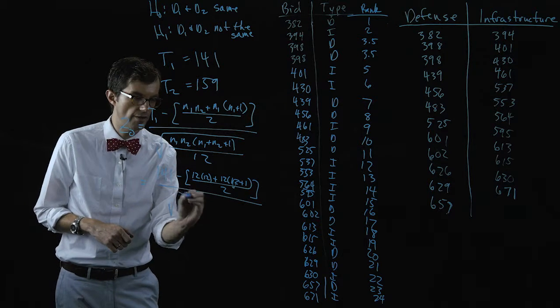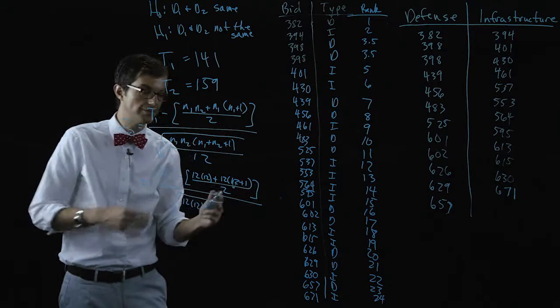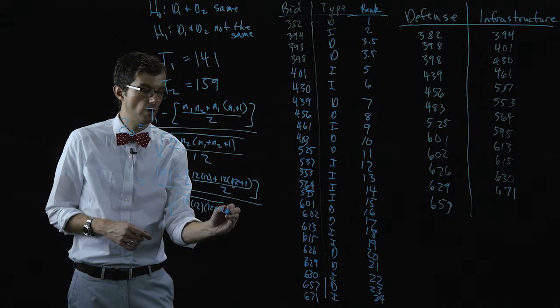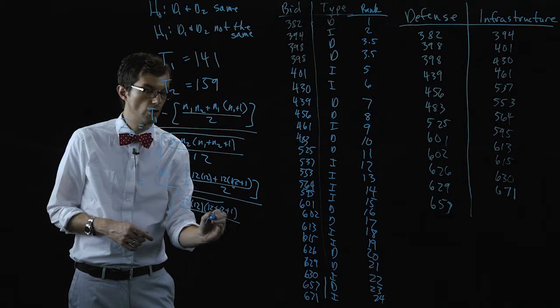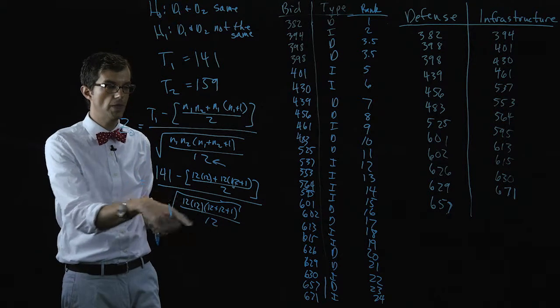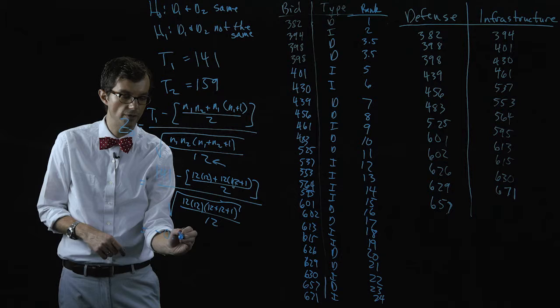Here we have twelve times twelve plus twelve times twelve plus one all over two. Down here we have the square root of twelve times twelve, the sample size is the same for both of these so this is a little boring. Twelve plus twelve plus twelve plus one all over twelve. Note that that has nothing to do with the sample size. So if we work this out we should get a value of negative zero point five two.